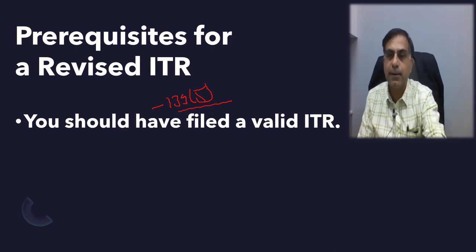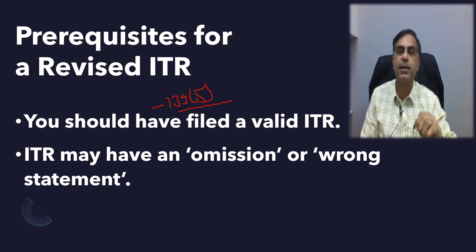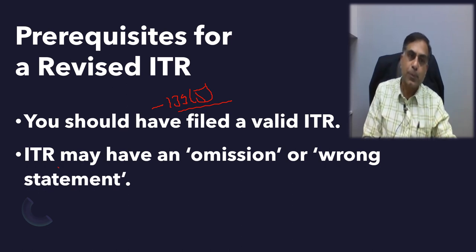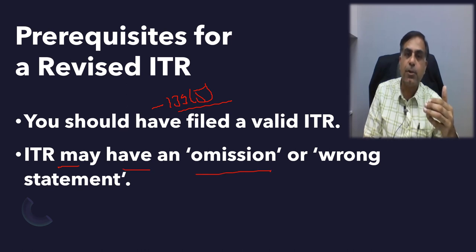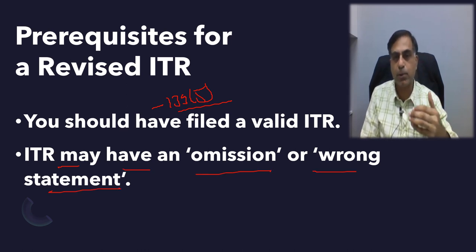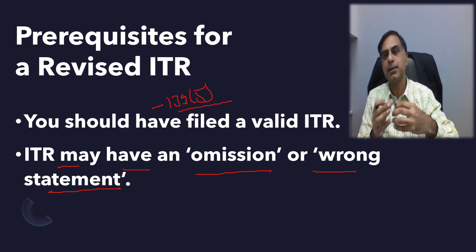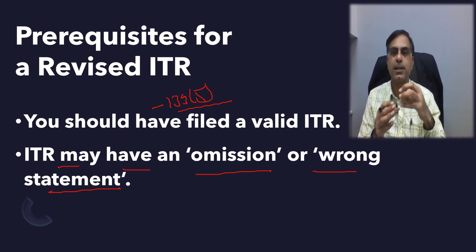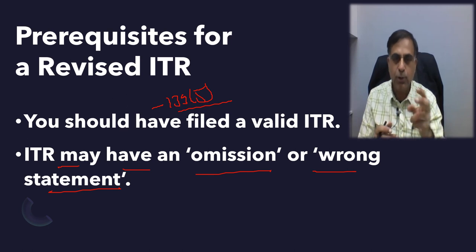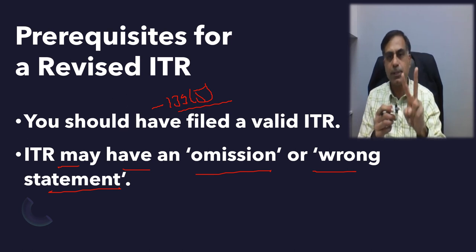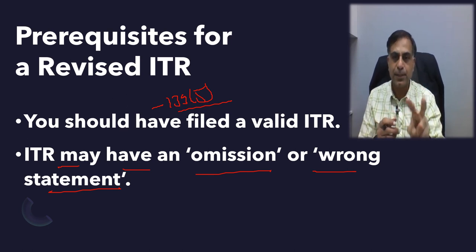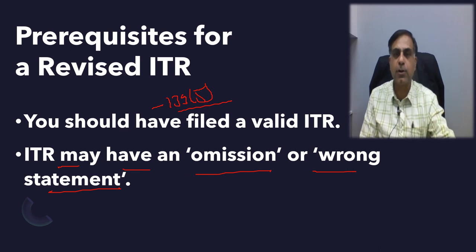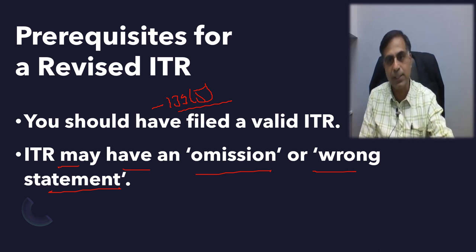If you have filed a valid ITR, then there can be a revised return. The second important point is that such ITR may have an omission or wrong statement. An omission means forgetting to include something in your return, and a wrong statement means putting something incorrect in the return. If either of these two grounds exist, you should think of filing a revised return as per Section 139, subsection 5.